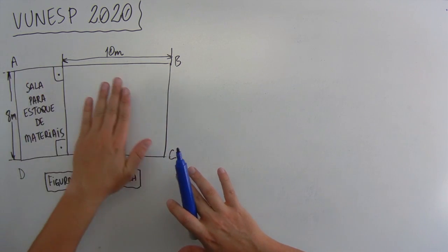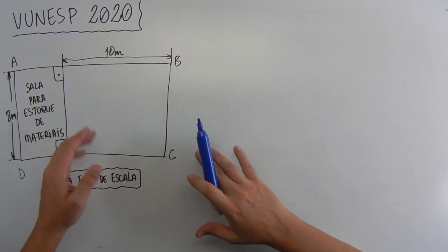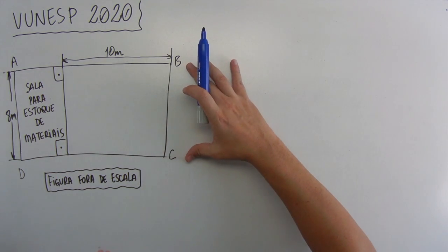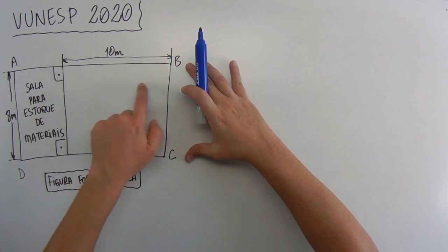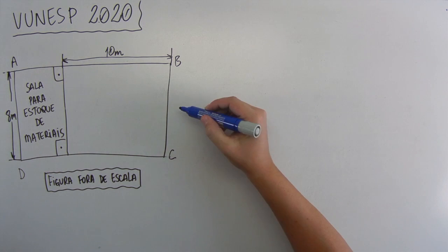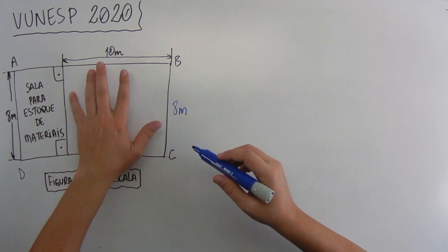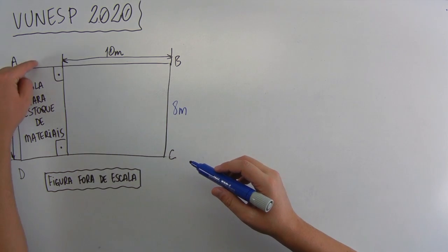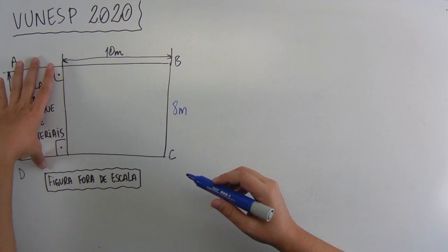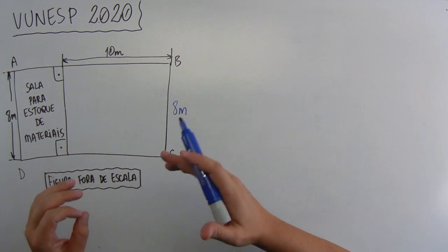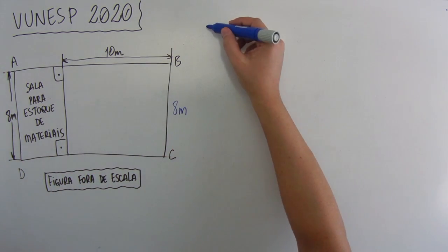Então, tá dividido aqui em duas salas. Não dá pra dizer que aqui é um quadrado, não dá pra dizer que aqui é um retângulo. Aliás, aqui dá pra dizer que aqui é um retângulo, porque esse lado aqui é 10 metros e esse lado aqui, 8 metros. O 8 e o 10 são diferentes, então esse pedaço aqui é um retângulo. Agora, aqui a gente não consegue falar que é um retângulo porque não tem o tamanho. Então, não vamos confiar na figura, vamos confiar no que tá escrito no enunciado e nos valores reais.